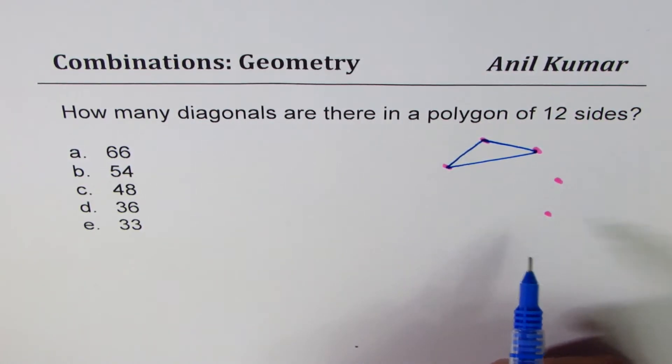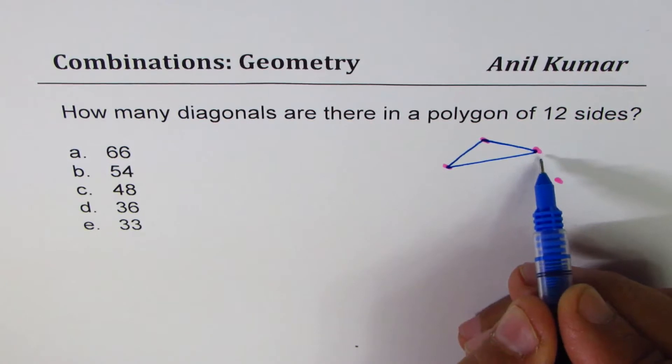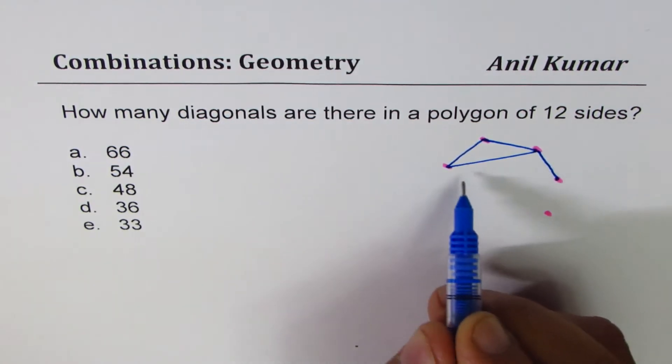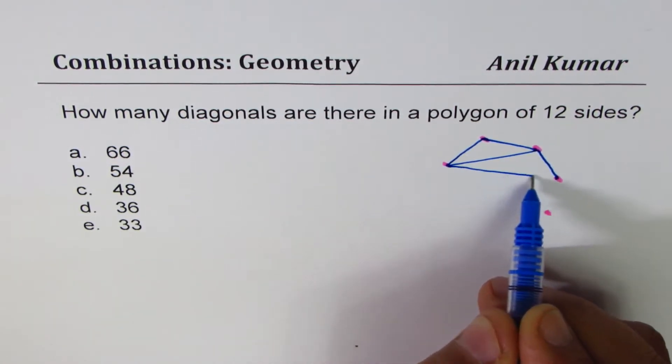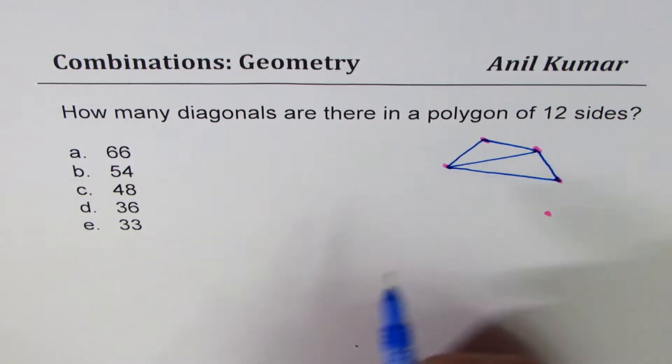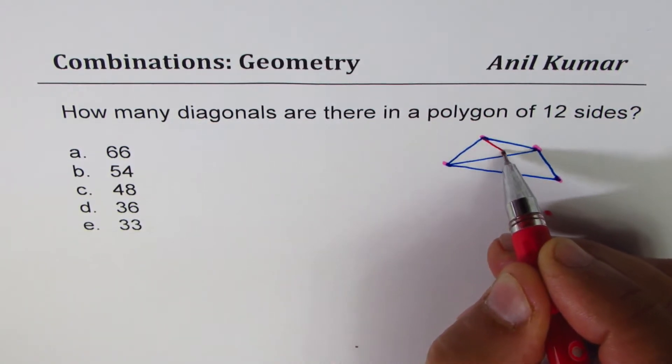Now what happens when we join the fourth point? With the fourth point, we do make diagonals. One which you could see is already there and the other one we add. So we get two diagonals as soon as we add the fourth point.